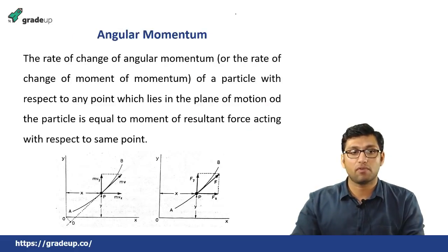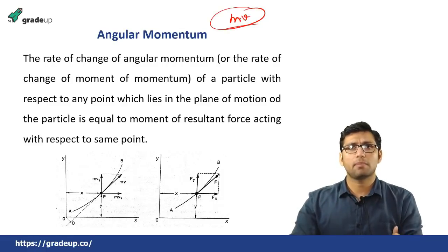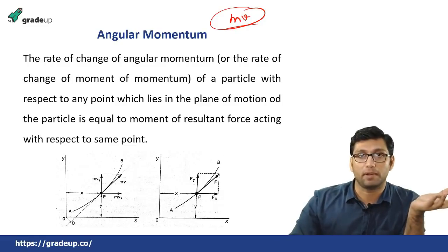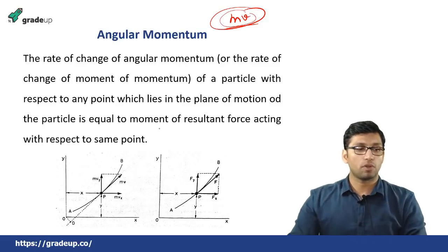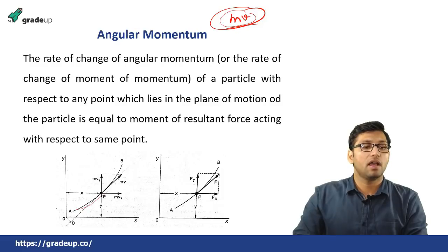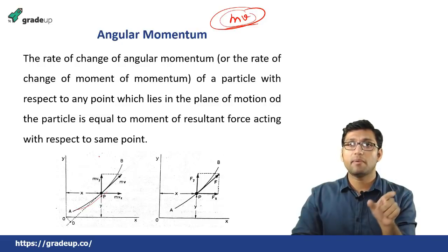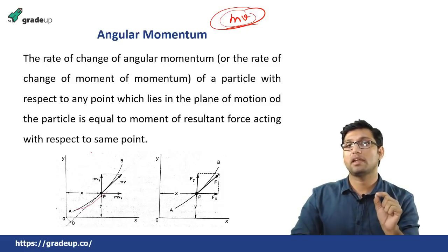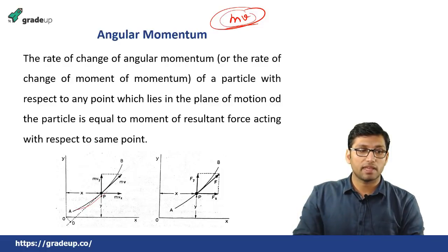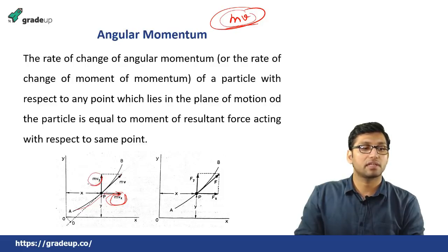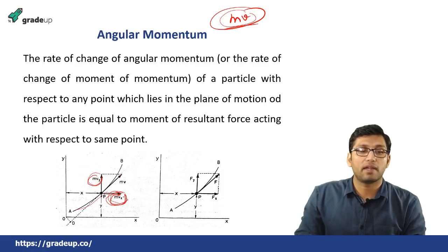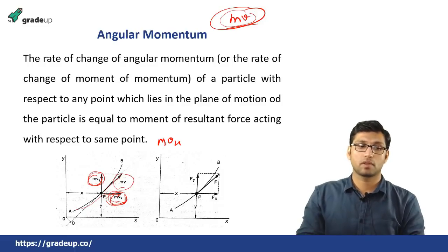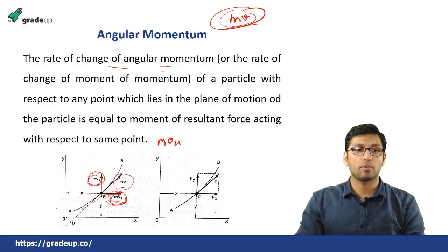Now, what is angular momentum? So far we have studied linear momentum — M × V is called linear momentum. Angular momentum is called moment of momentum. When mass M is multiplied with velocity it is called momentum. If a particle's motion is taking place in a curvilinear or curved path, linear momentum was used for translatory or rectilinear motion. When motion takes place in a curved path, there will be two components: in the x direction M×Vx, and in the y direction M×Vy. So the net momentum is M×V. The angular momentum is the moment of momentum.